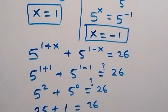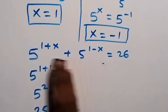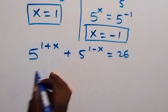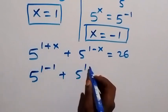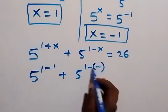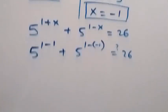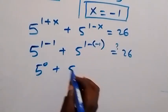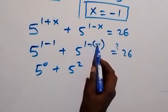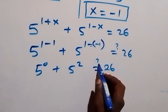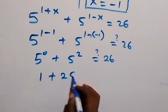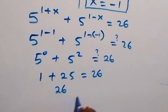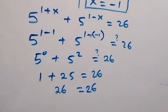Now let's check x equals to minus 1. We put minus 1 in: 5 raised to the power 1 plus minus 1, plus 5 raised to the power 1 minus minus 1, which turns to plus. This is the same as 5 raised to the power 0, plus 5 raised to the power 2, that's 1 plus 25, equals 26. Since 26 equals 26, x equals to minus 1 also satisfies this equation.